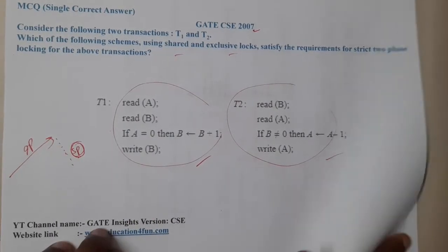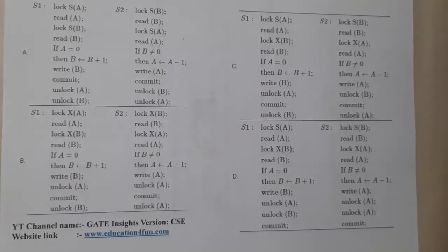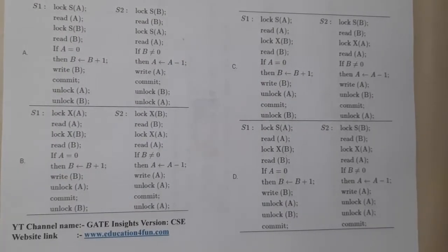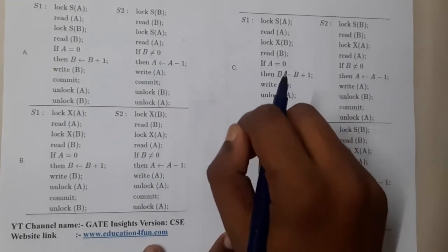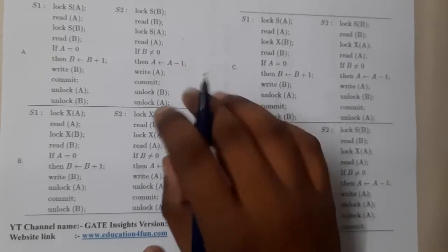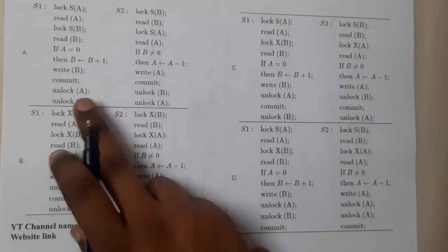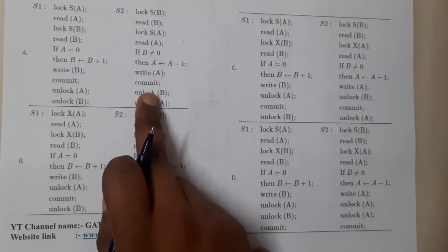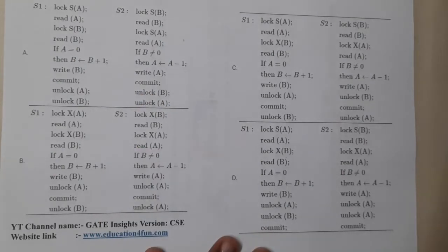These are the given answers which are given by the examiner. Let us start checking them. Firstly, we can lock any time but unlocking should be done at the end only. If it is a shared lock, you can unlock at any moment of time. This is scheduler one, this is scheduler two. I think both of them should satisfy individually.